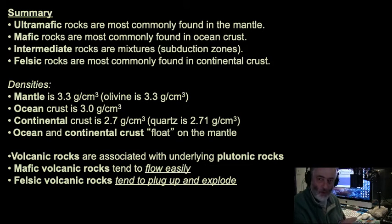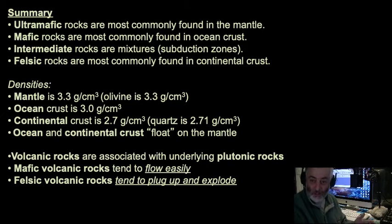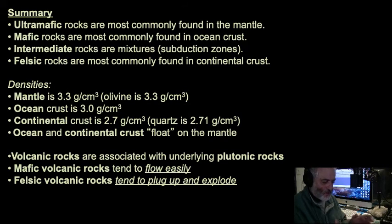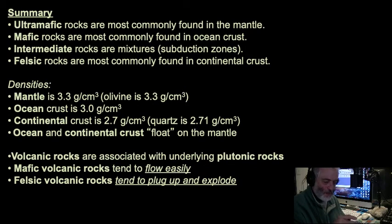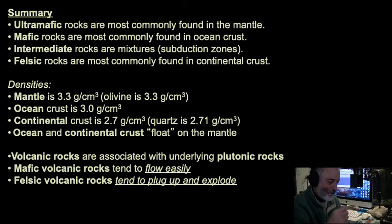Mafic rocks tend to flow easily. If you have single chains, double chains, or simpler three-dimensional minerals, they tend to flow. In Hawaii, you wouldn't expect a massive, violent eruption unless it involves steam — steam is the only way to get an extremely violent eruption there. But felsic rocks — rich with quartz and feldspars — tend to plug up that volcanic edifice. Eventually they'll plug it, the volatile gases will build up, and it will erupt violently. So there's a key difference between basaltic rocks associated with ocean crust and felsic volcanic rocks associated with continental crust.